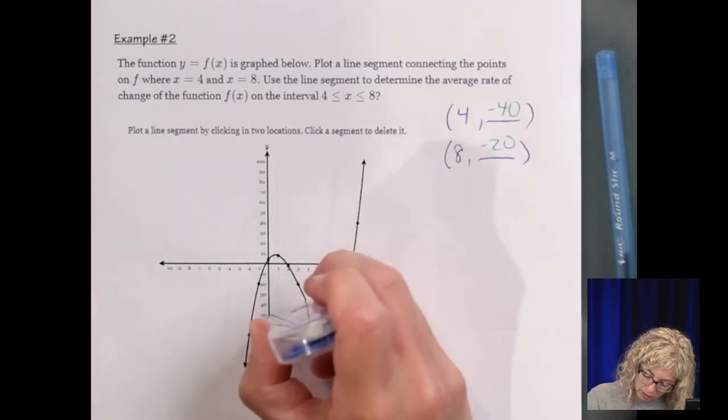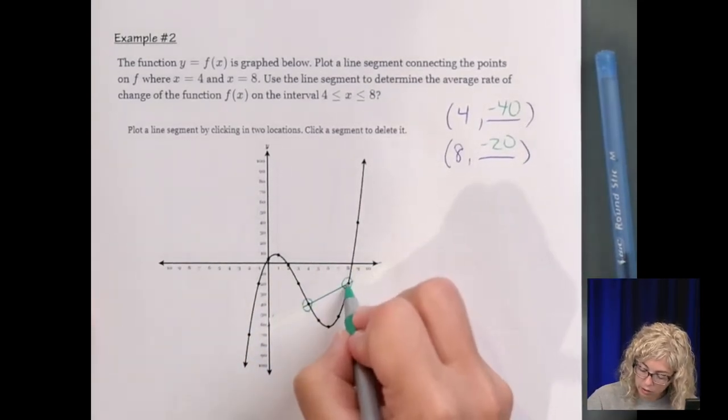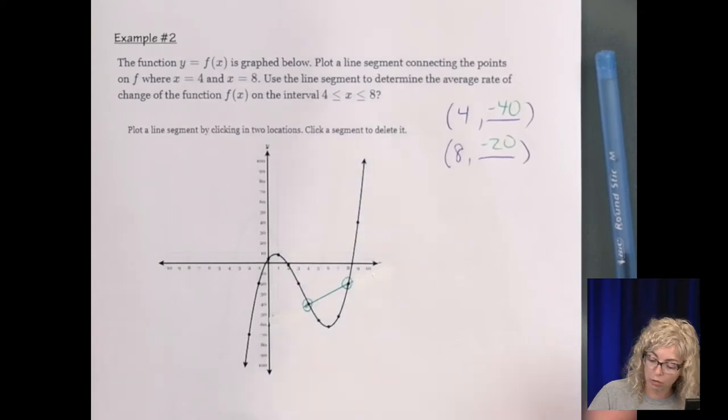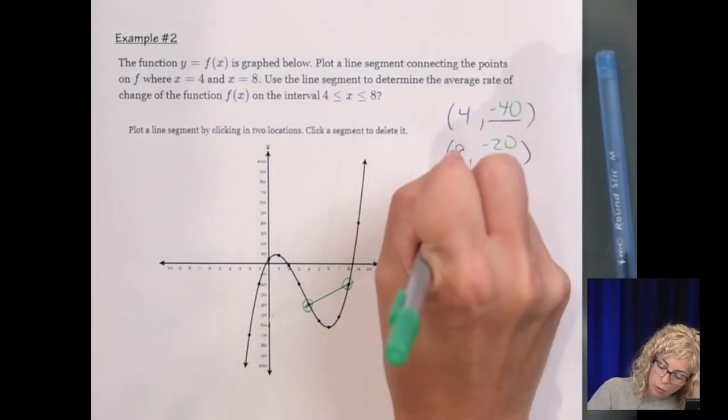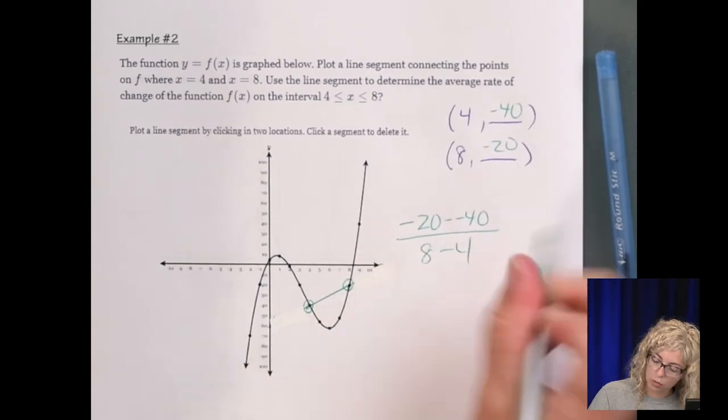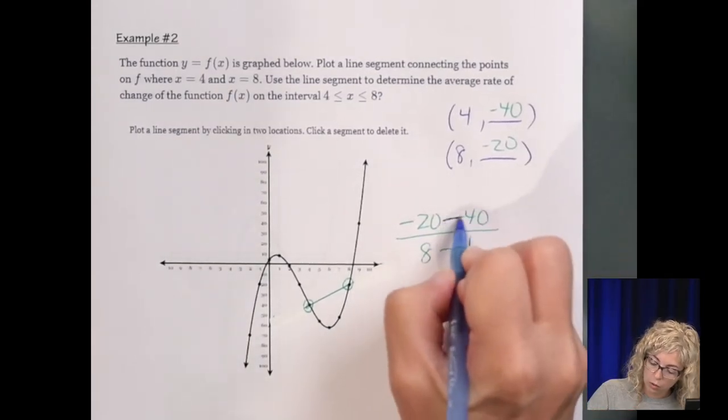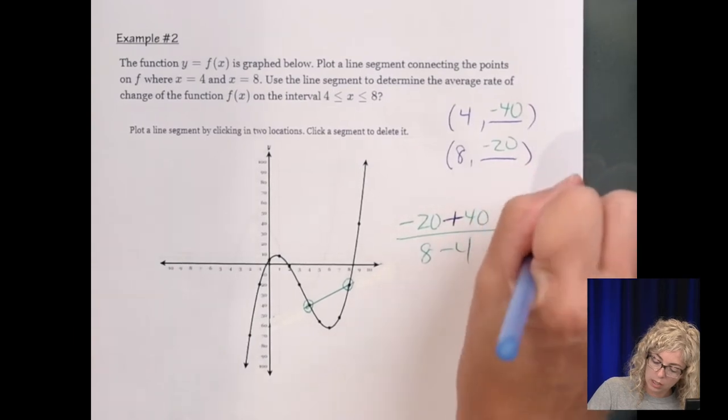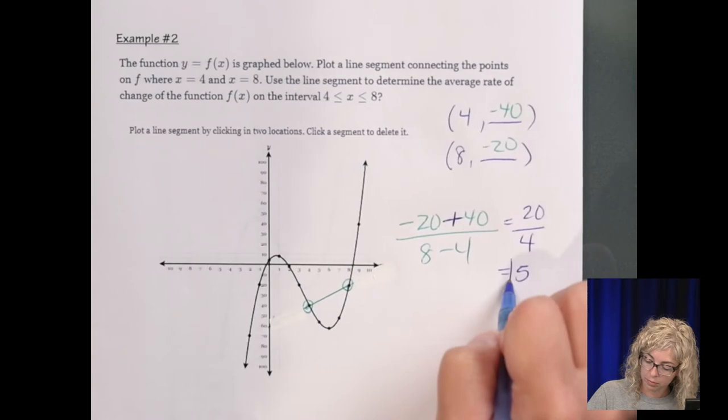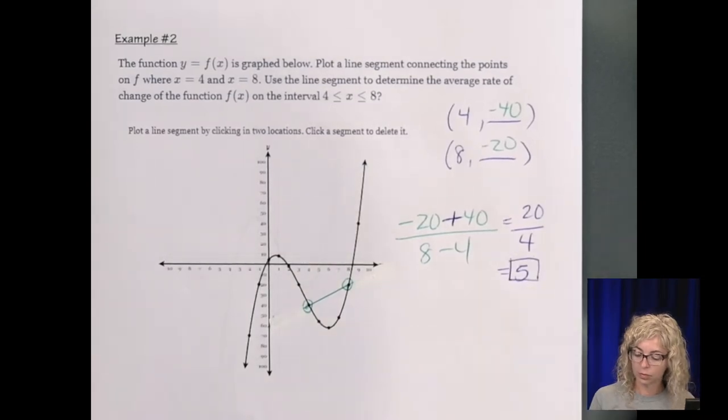So I gotta read more carefully and this is important for geometry. Line segment, not line, means it's just gonna end. There's no arrow. So here's the line segment. Use the line segment to determine the average rate of change. Well, I'm just gonna practice using the formula. So it'd be negative 20 minus negative 40 and then 8 minus 4. So we get 20 over 4, which is 5.